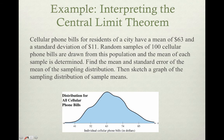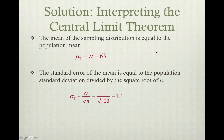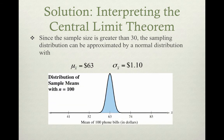The standard error of the mean equals the population standard deviation, which is 11, divided by the square root of n. So we take sigma of 11 divided by the square root of 100 and we get 1.1. Since the sample size is greater than 30 — it was 100 — the sampling distribution can be approximated by a normal distribution with a mean of $63 and a standard deviation of $1.10.